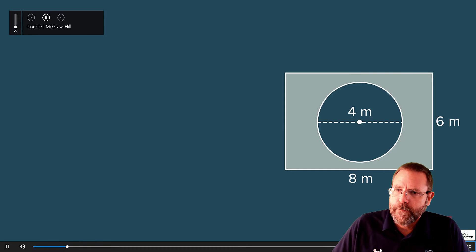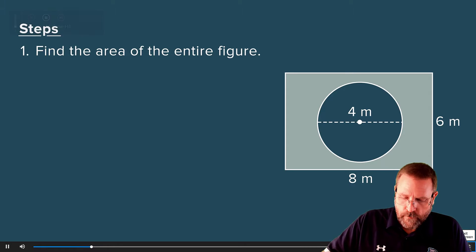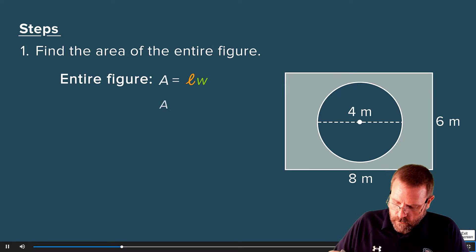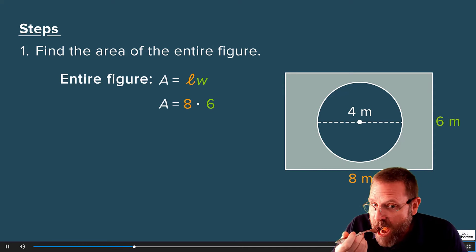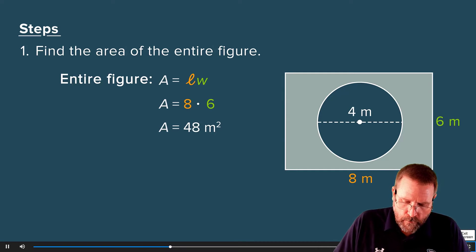To find the area of a shaded region, first find the area of the entire figure. In this example, the entire figure is a rectangle. Multiply the length, 8 meters, by the width, 6 meters, to find the area. The area of the entire figure is 48 square meters.